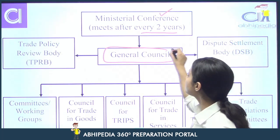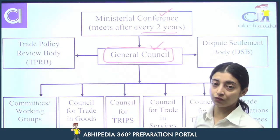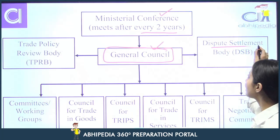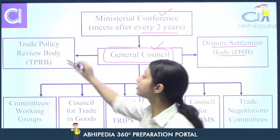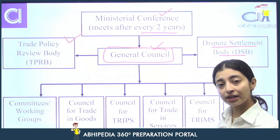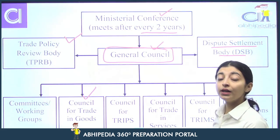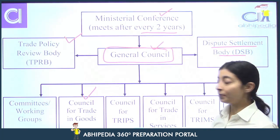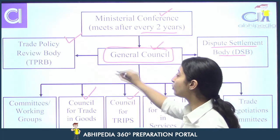Uske baad aata hai general council. General council kya hai? Ye regularly meeting body hai. Ye jo regularly meet karti hai, wo general council hai. Ye apne decisions le sakti hai on behalf of ministerial conference. Aur ye general council teen tarah se milti hai: it meets as a general council, it meets as a dispute settlement body, and it also meets as a trade policy review body. Jab trade ki policies ko review karne ke liye milti hai, us time it works under the rules of trade policy review body.